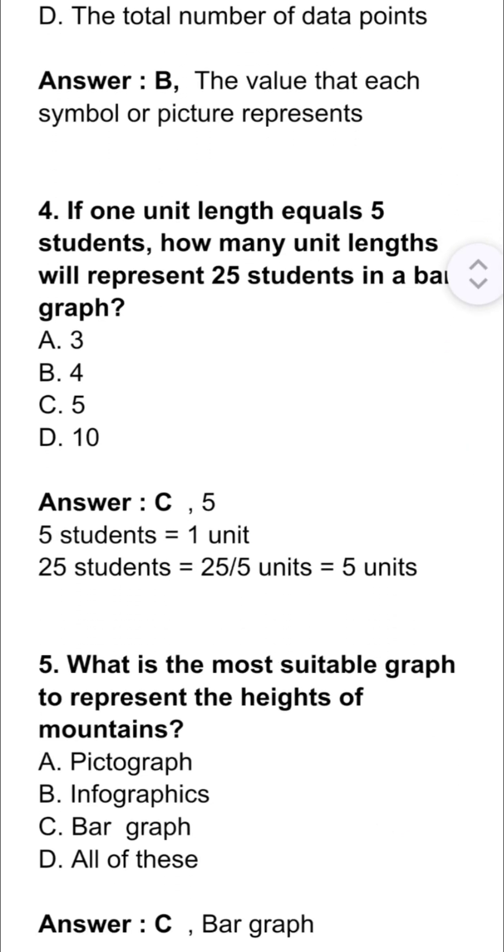Question 4. If 1 unit length equals 5 students, how many unit lengths will represent 25 students in a bar graph? Option C is correct. 5. 5 students equals 1 unit. It means 25 students equals 25 upon 5, that is equals to 5 units.